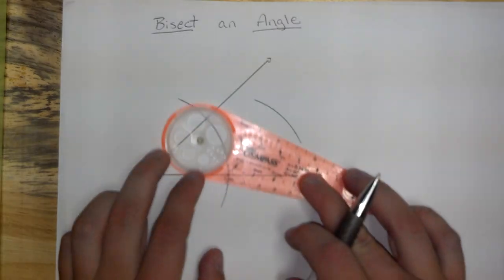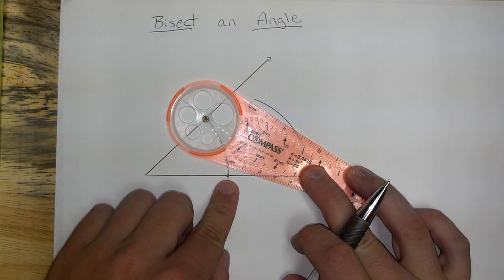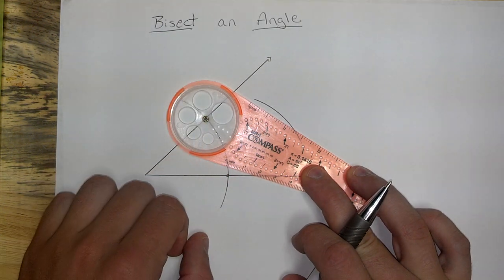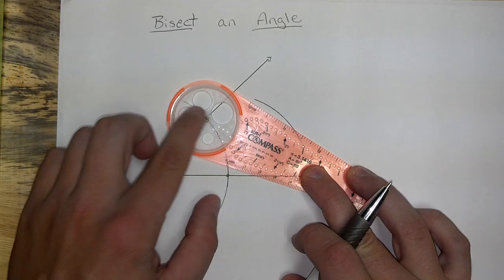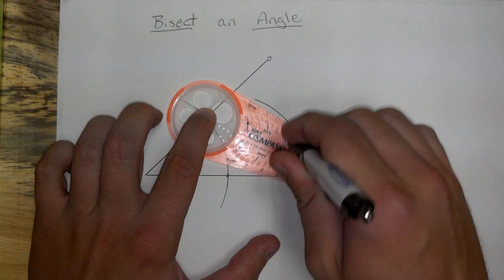Remember which hole you used there. Because now you have to come over here and do the same thing. Just like we did over here. Line up the brass ring with where our first arc hit the angle. Remember which hole you used. Right there.